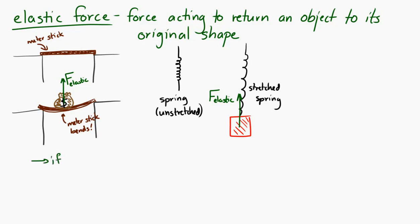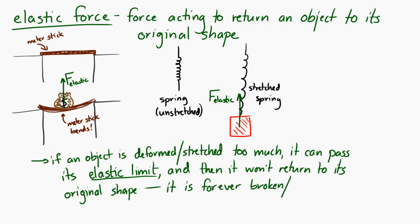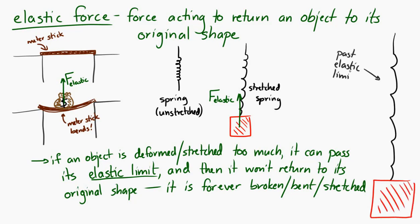Now, if an object is deformed too much, if we push it too far from its original shape, it can pass its elastic limit. When that happens, then it won't return to its original shape, and it'll be forever changed. It'll be broken, or bent, or stretched in some way. So for example, if you had a spring, and you put a very heavy object on it, the spring would stretch a lot. And then when you take the object off, if it's past its elastic limit, then when it tries to return to its original shape, it turns out the spring is bent, and it no longer can return to its original shape.